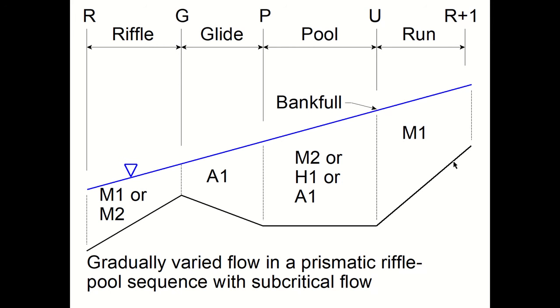As the water enters the glide it's an A1 gradually varied flow curve and in the riffle it's either an M1 or an M2 gradually varied flow curve.